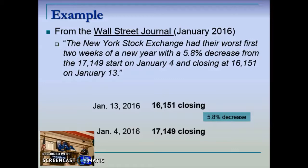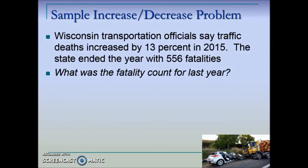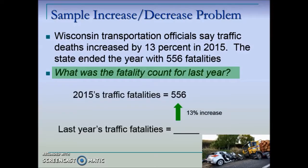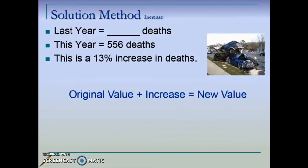Here's an example: Wisconsin transportation officials say traffic deaths increased by 13% in 2015. The state ended the year with 556 fatalities. The question is asking what was the fatality count for last year. If we map out this information, we don't know last year's fatality count; we know it's an increase and this year's count is 556. To help us solve this, we'll roll out an equation — we'll take the original value, which acts as the base, and the new value will be considered the part.